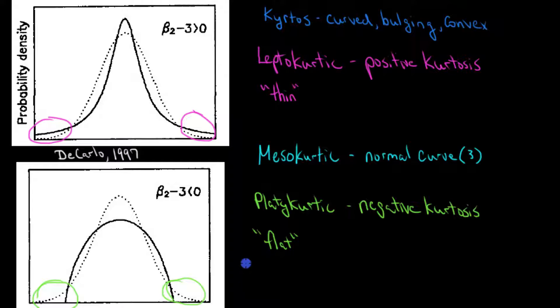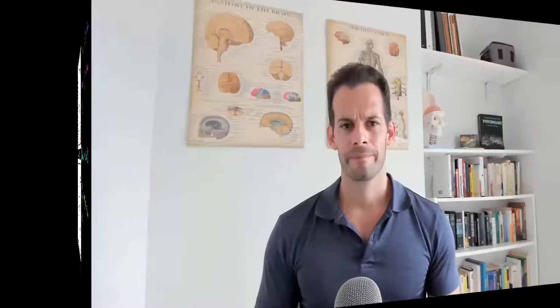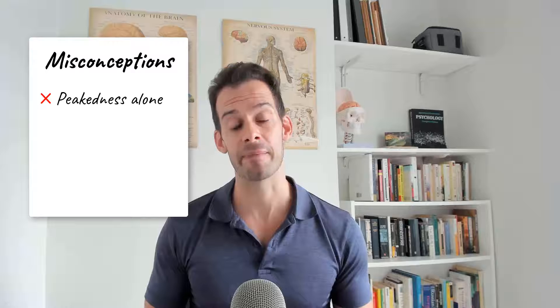We can see with these terms that they are part of the source of confusion about kurtosis, because they cause us to focus on the wrong part of the distribution — they make us think about thinness and flatness and the center, when in fact we should be focusing on the tails. Three common misconceptions about kurtosis were described in a paper by Lawrence DeCarlo in 1997 titled 'On the Meaning and Use of Kurtosis.' The first misconception DeCarlo pointed out was some sources defining kurtosis as being about peakedness alone.